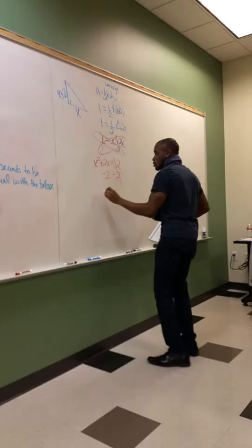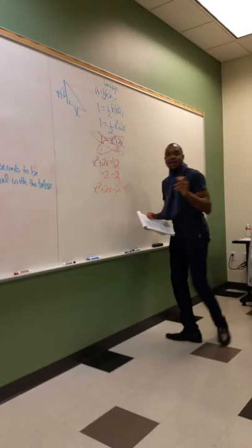I have to subtract two from both sides first. So I get x squared plus 2x minus 2 equals zero. Now here's the deal.